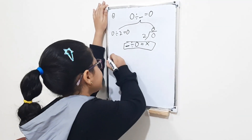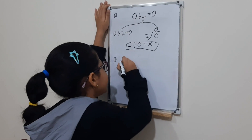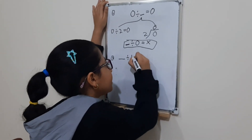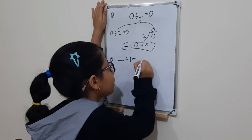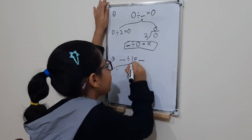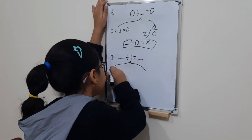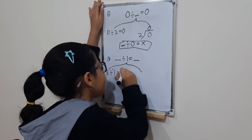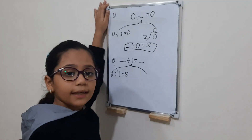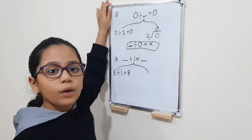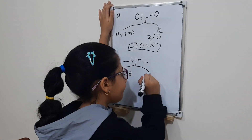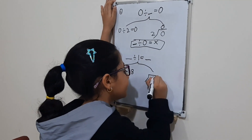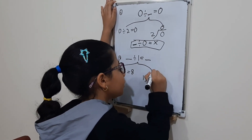The second step: any number divided by one equals the same number. Example: eight divided by one equals eight. We will make it in the vertical way, so it will be eight divided by one equals eight.